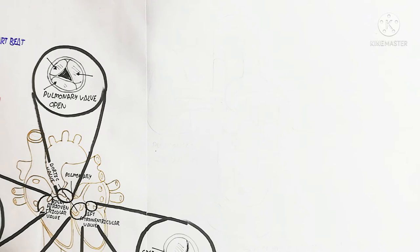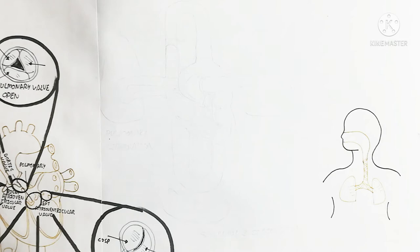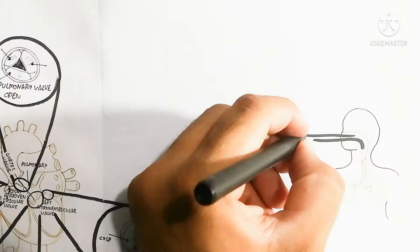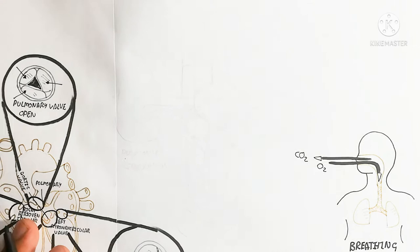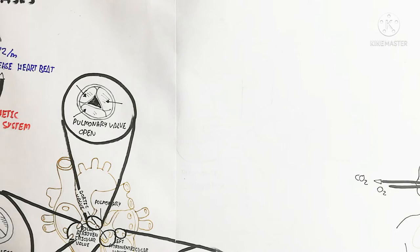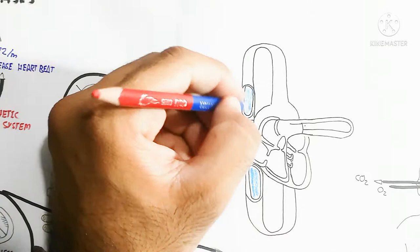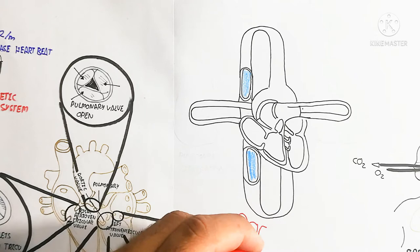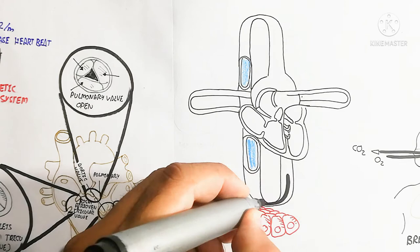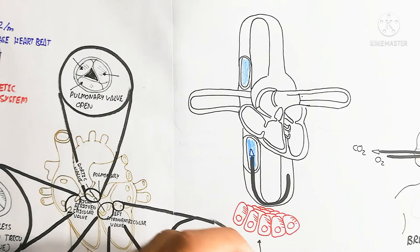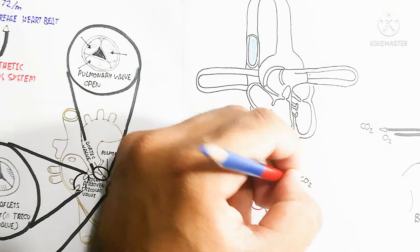During inhalation, oxygen moves into the lungs due to lower partial pressure of oxygen in the lungs, while carbon dioxide moves out because its partial pressure is higher inside. This breathing mechanism works antagonistically due to changes in partial pressure between the environment and the lungs. In systemic circulation, oxygenated blood is delivered through capillaries to tissues throughout the body for aerobic respiration during the Krebs cycle, while carbon dioxide is absorbed and transported as carbaminohemoglobin, and oxygen is carried as oxyhemoglobin.